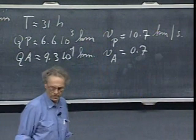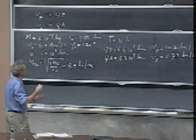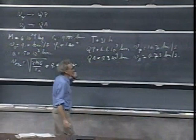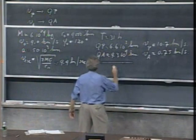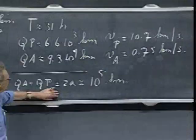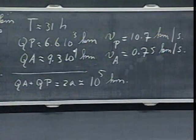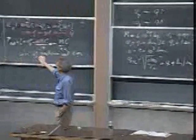An immediate result of conservation of angular momentum is that QP·vP must equal QA·vA. And as a check: QA plus QP must equal 2A, which in our case is about 100,000 kilometers. Adding 9.3×10⁴ and 6.6×10³ indeed gives very close to 100,000. So we know everything about this ellipse from the four initial conditions — the period, apogee, perigee, orbital period, everything.